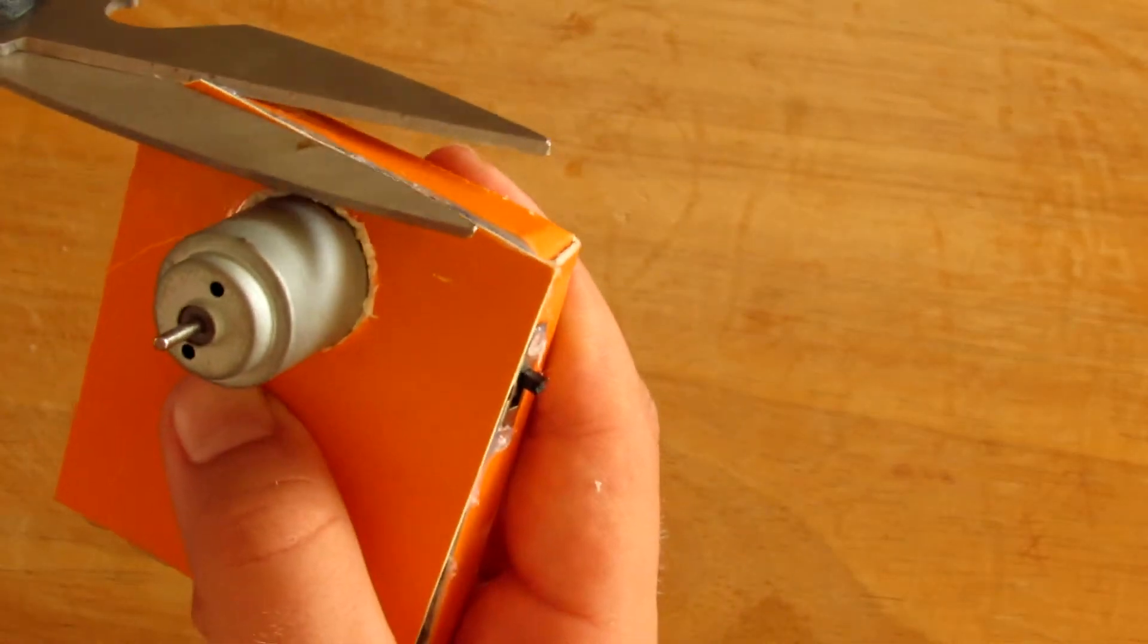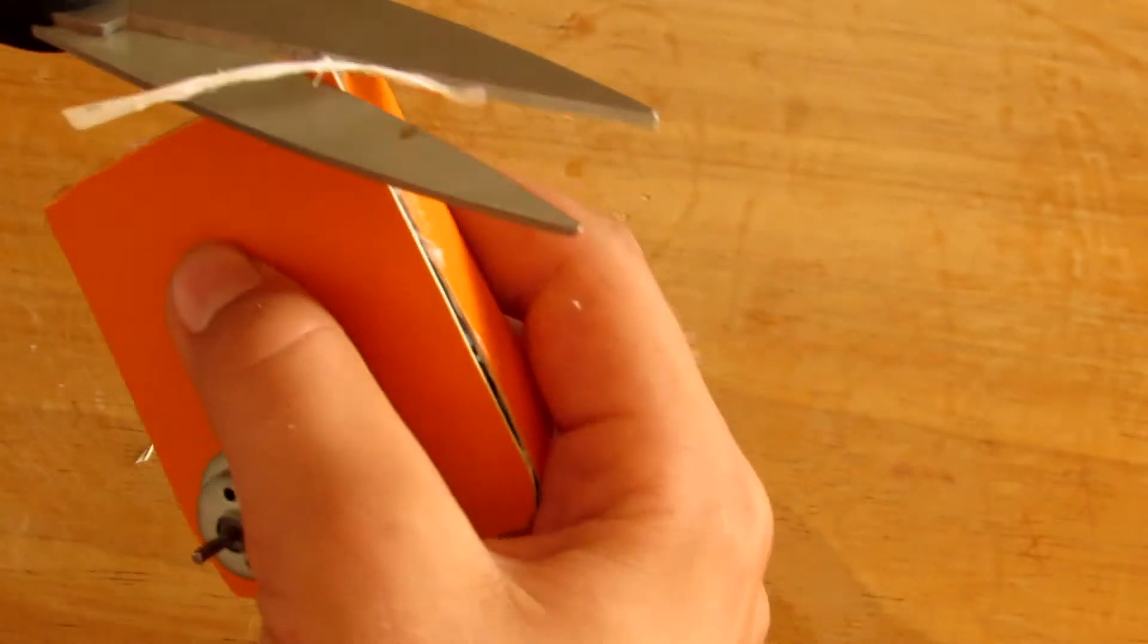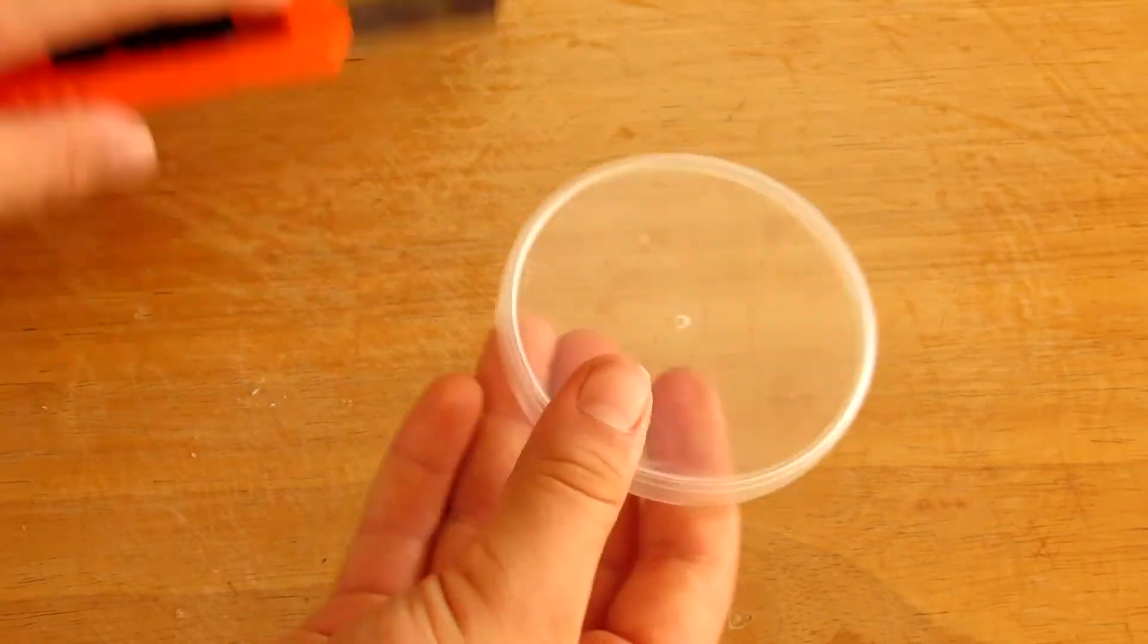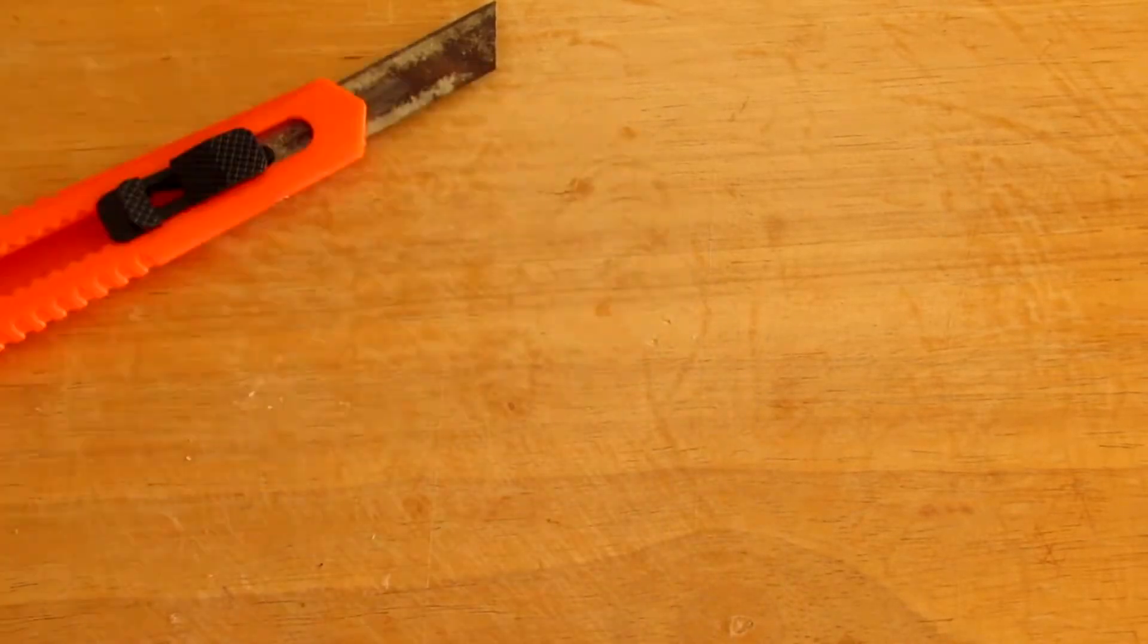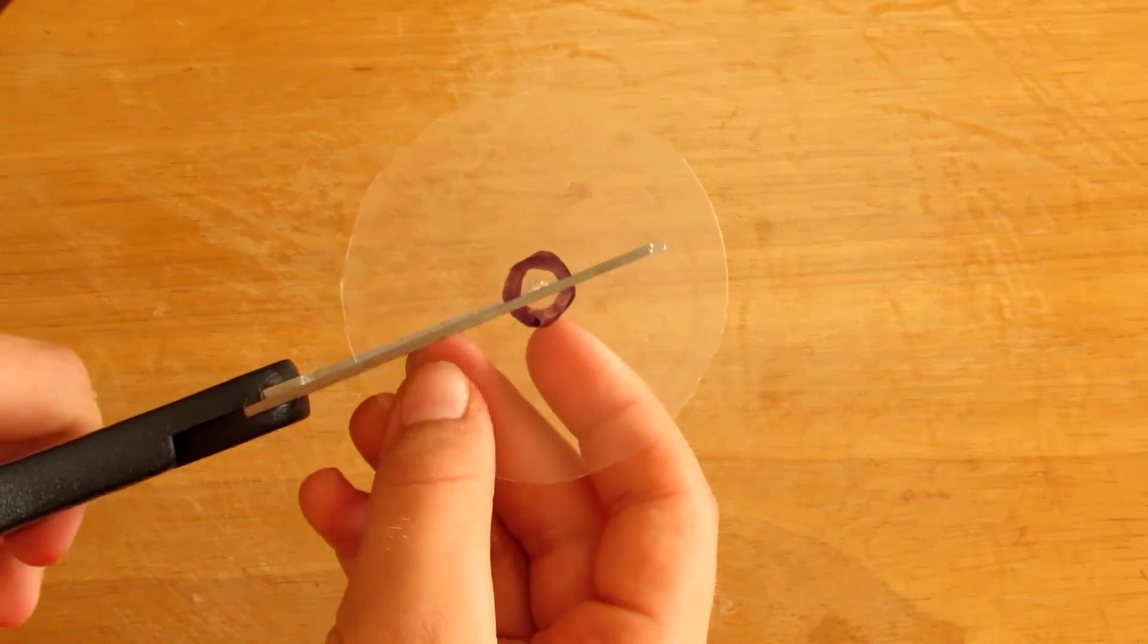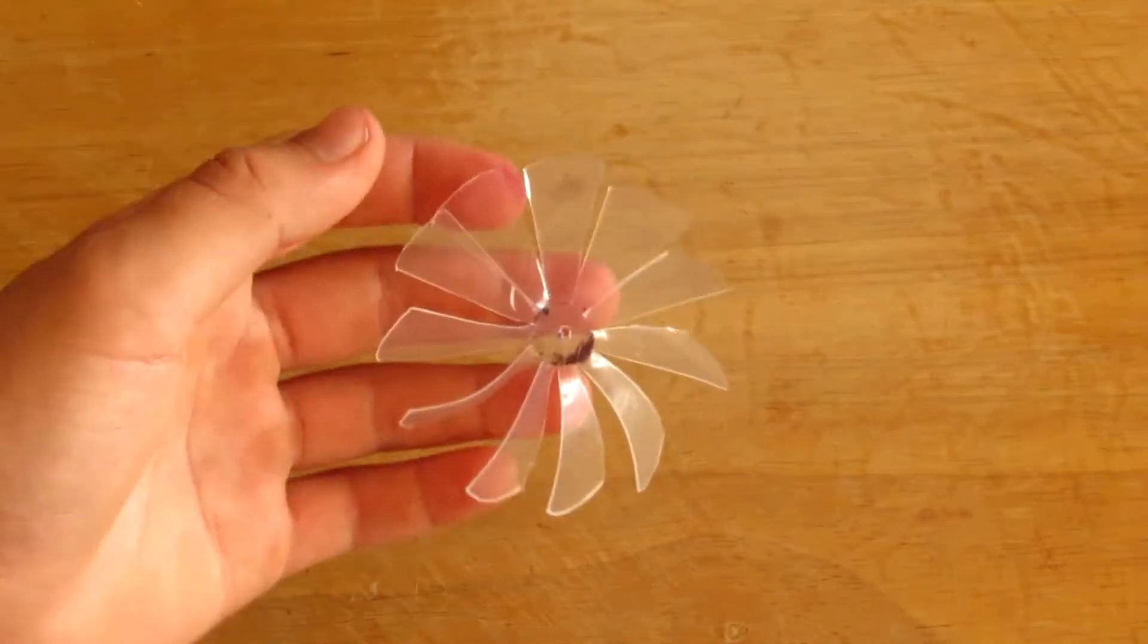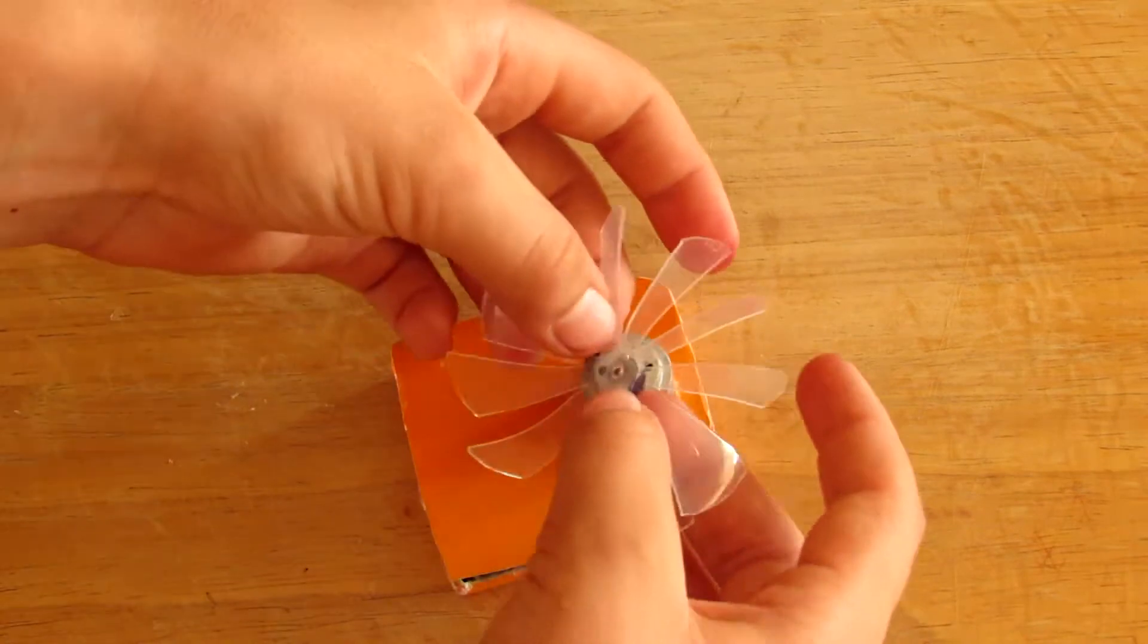Now we are going to make the fan. We're going to cut this outer ring off the lid. This is how it should look like once you cut all the grooves. So this is how it should look like once you finish bending them. Now we're going to attach the two together.